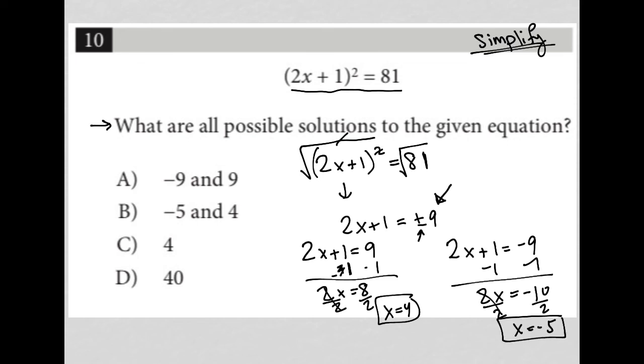Let me just make sure the question here. So it says, what are all possible solutions to the given equation? Perfect. We found x is 4 and x is negative 5. Therefore, the answer is choice B.